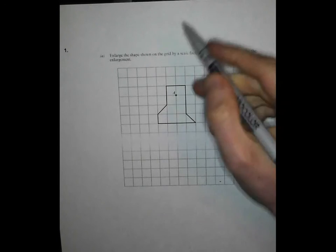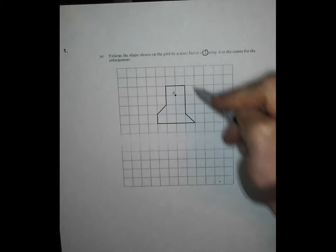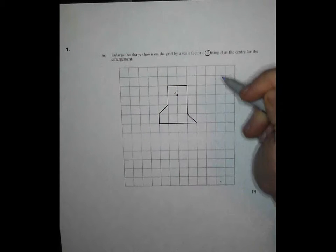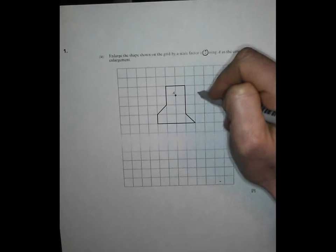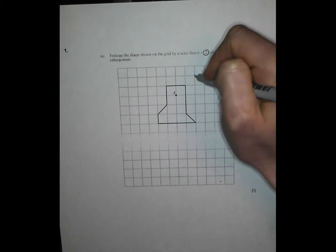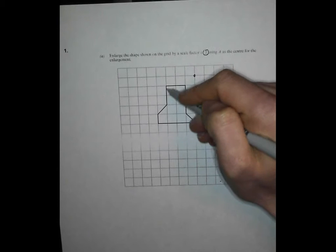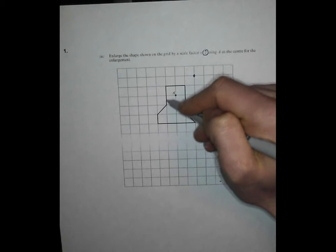So let's have a look. Say I want to know where that point goes. Well I've got to go from my centre, one to the right and one up. Instead I'm going to go one, two to the right and two up. And I'm going to mark it on. Let's take this corner here. I've got to go one to the left and one up. So instead I'm going to go one, two to the left and one, two up. And I'll mark it on there.